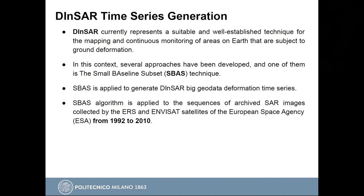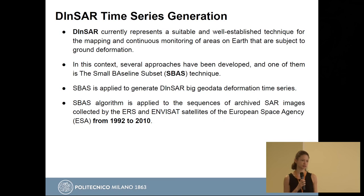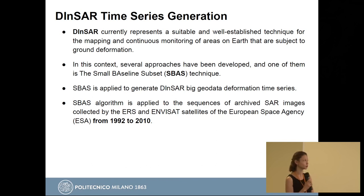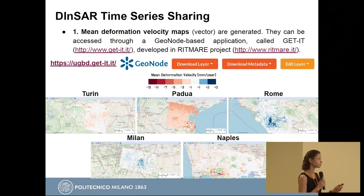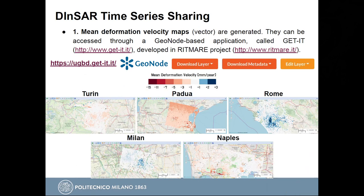I am not so knowledgeable on the generation of the DIN-SAR time series — the National Research Council of Italy had that responsibility. This has been implemented using the Small Baseline Subset (SBAS) technique developed in 2002, using SAR images collected by the ERS and ENVISAT satellites of the European Space Agency for the years between 1992 and 2010. Using these deformation time series data, we generate two kinds of datasets. The first is mean deformation velocity maps in vector format, shared through a GeoNode-based application called GET-IT, accessible at ugbd.get-it.it.